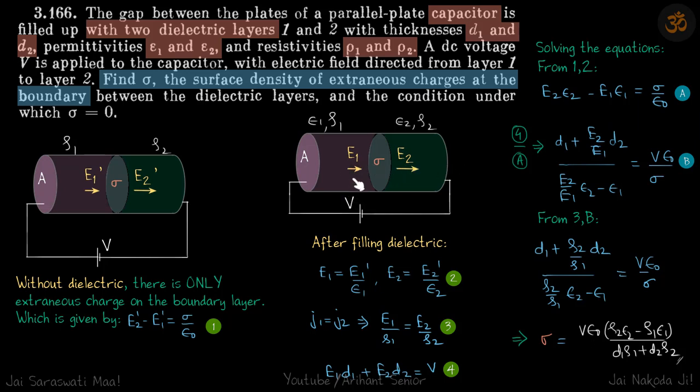One equation we will get by equating the current on both sides. J1 is equal to J2 and J is E by rho. E1 by rho1 is equal to E2 by rho2 and third equation because the potential is given. E1 D1 plus E2 D2 is equal to V.